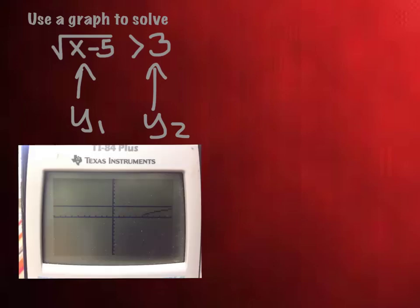But in this standard window, I can't see where the two intersect. See, this curve is the square root of x minus 5. You can see it's shifted right 5 units. And this line is y equals 3. And we want to know where they equal each other, so we're going to have to extend the x max in our window.